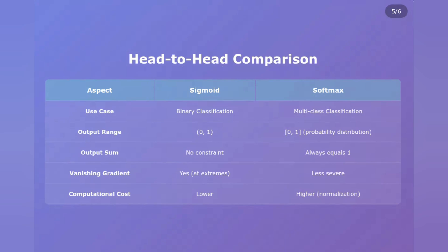When values get very high or very low, the gradients become tiny, making training slow. Computational cost: Sigmoid is cheaper — just one exponential calculation per neuron. Softmax is more expensive because it needs to calculate exponentials for all outputs, then normalize them.